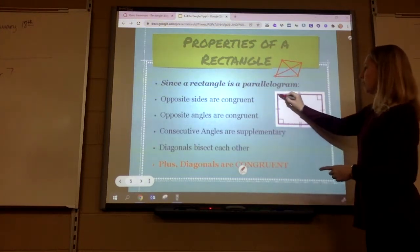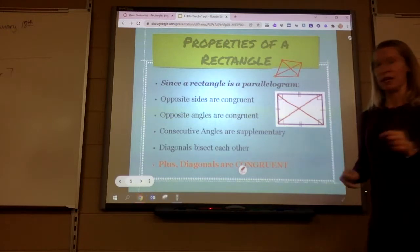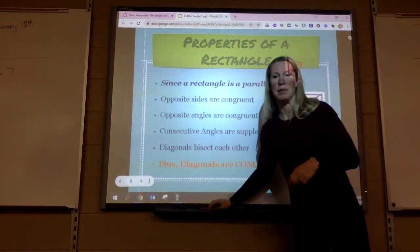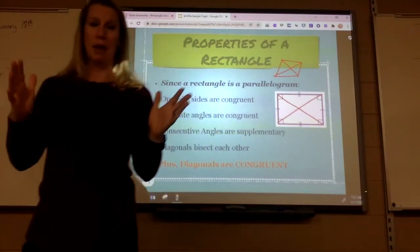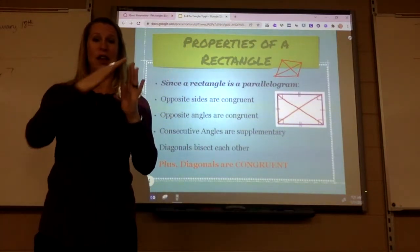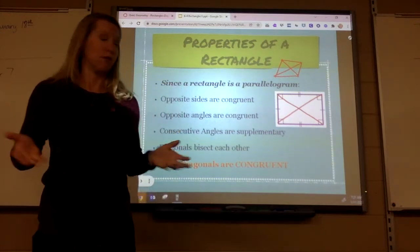But on a rectangle, diagonals are congruent. They equal each other. My dad builds houses. He's in construction. And sometimes to make sure that it's a perfect rectangle, they measure the diagonals. And if the diagonals are congruent, then they know it's a rectangle.